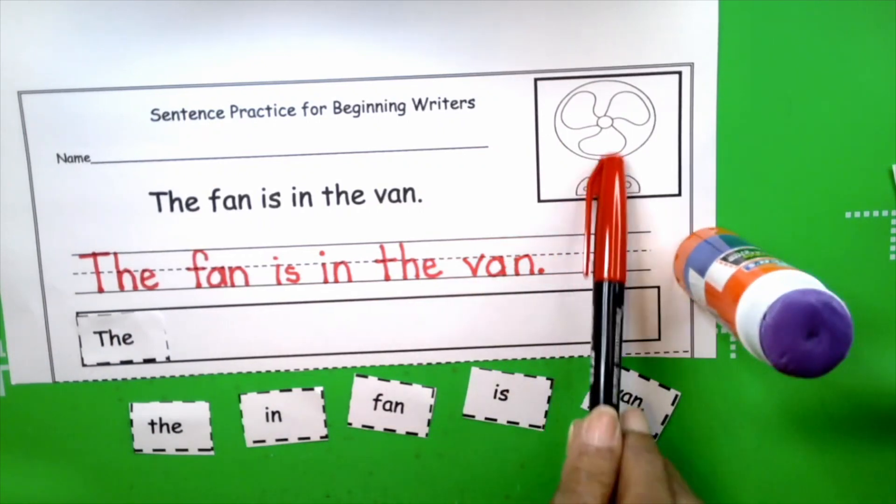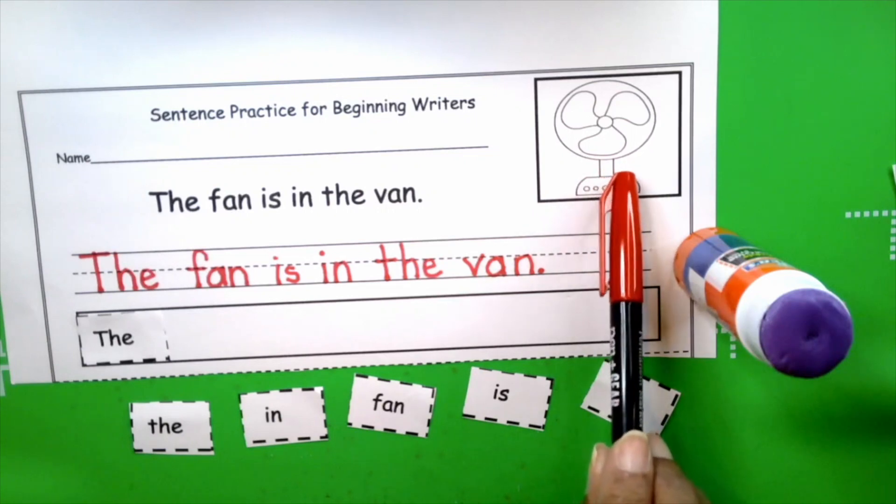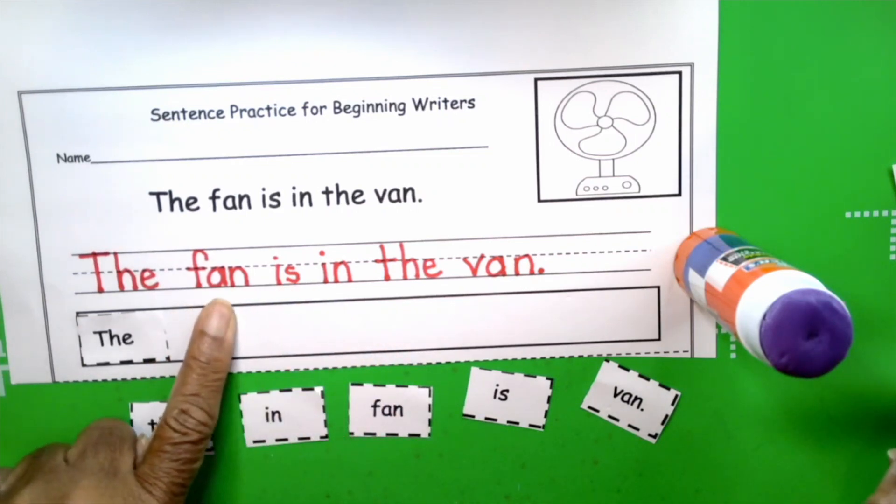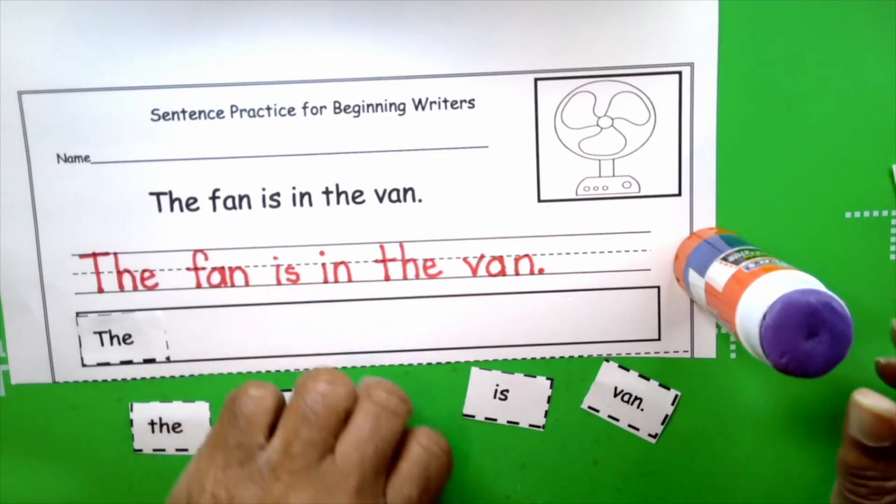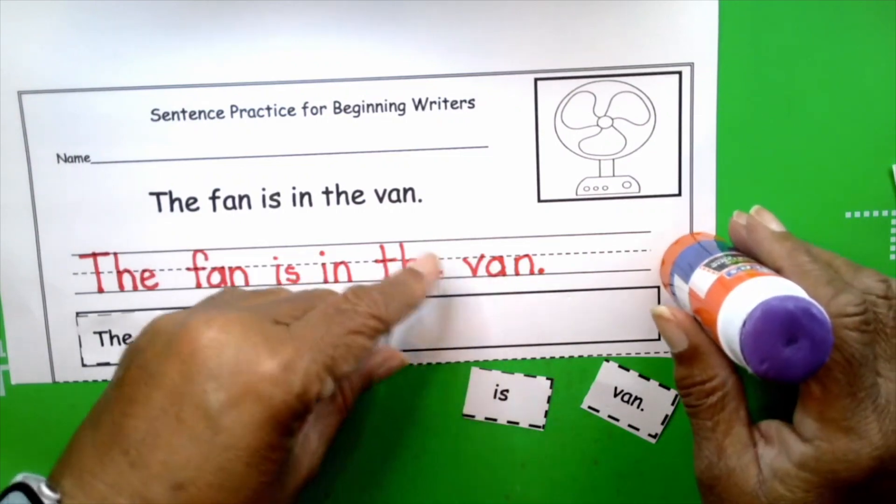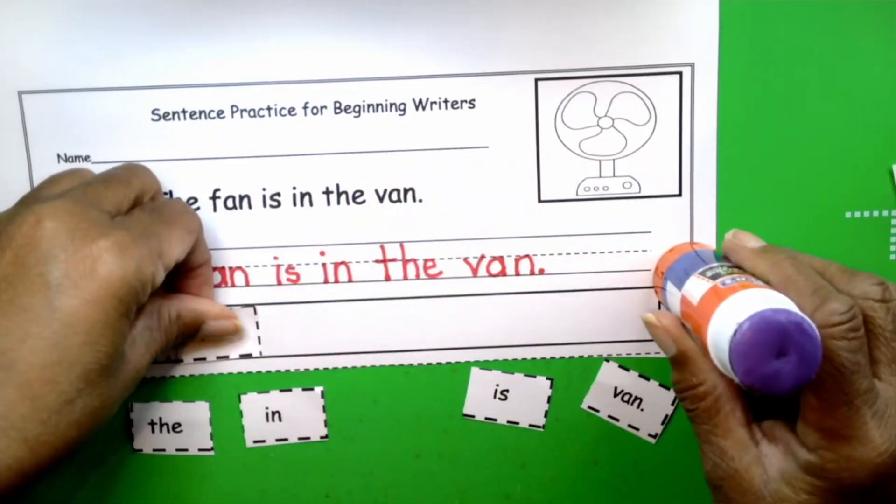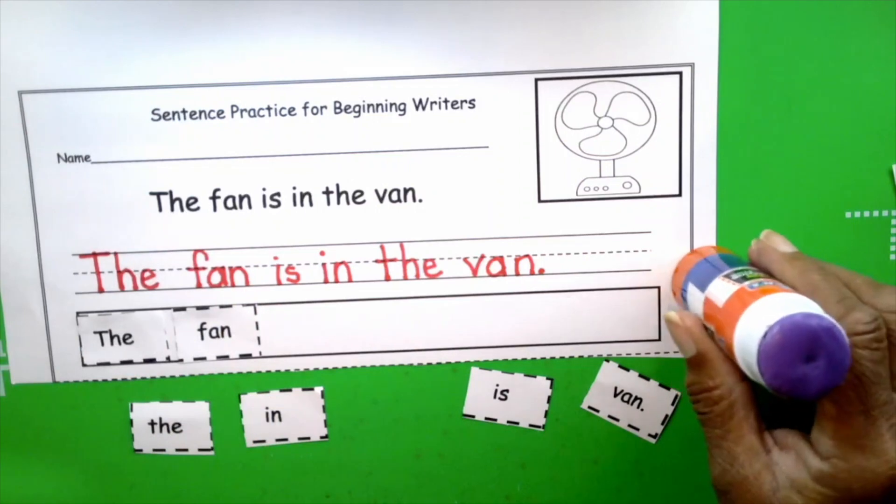And what are we talking about? We're talking about the fan. What's the beginning sound for fan? Which word has the f sound? This one, f, a, n. Very good. We're looking for a word that has an f, an a, and an n. Fan.